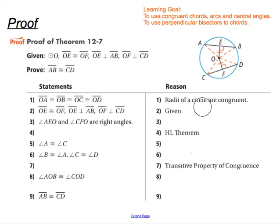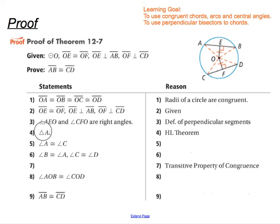We have OE perpendicular to AB and OF perpendicular to CD, giving us right angles by the definition of perpendicular segments. The reason given is the hypotenuse-leg theorem, so triangles AEO and CFO are congruent. Then we're told that angle A is congruent to angle C — that's corresponding parts of congruent triangles are congruent.